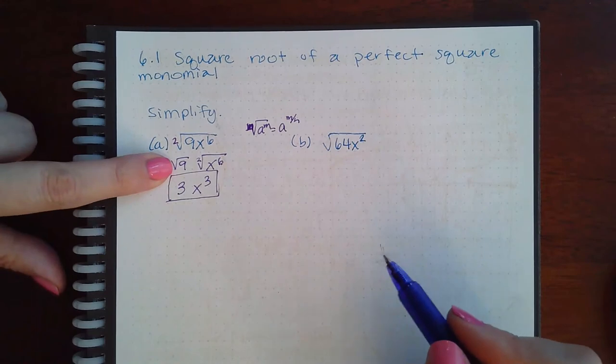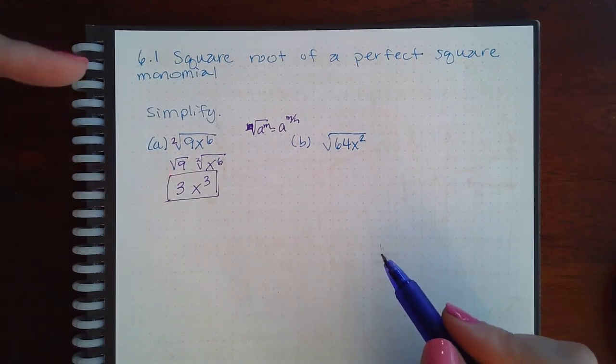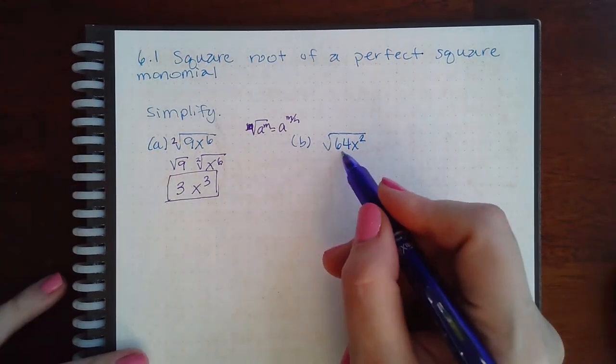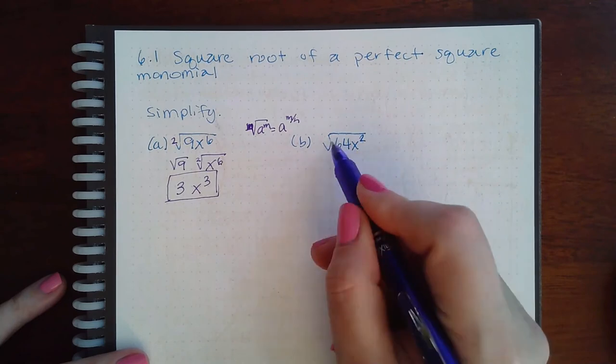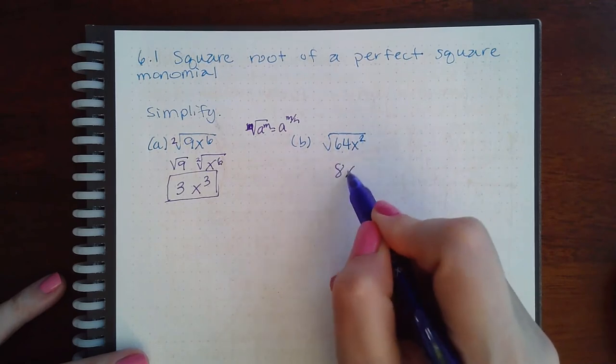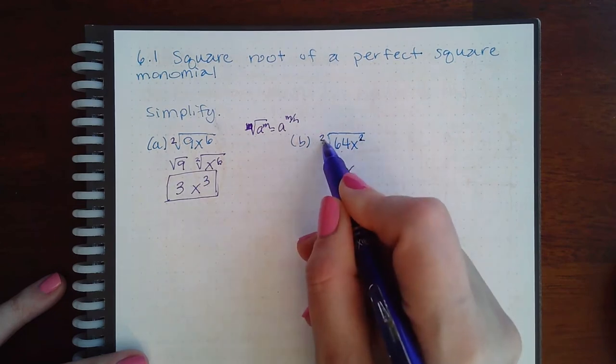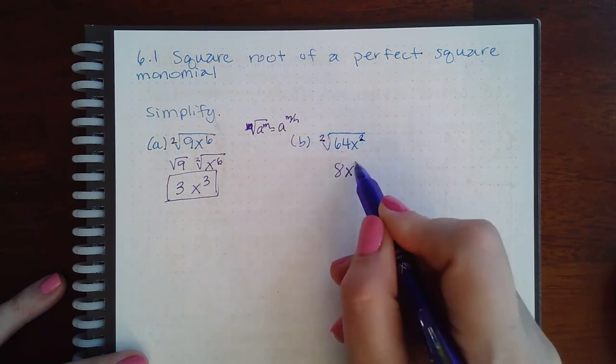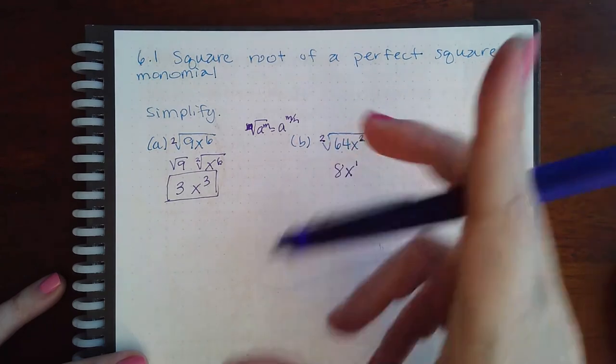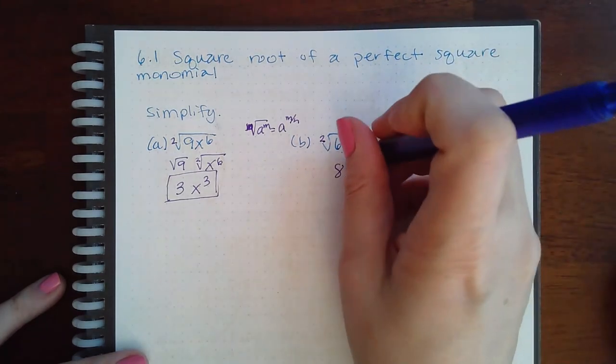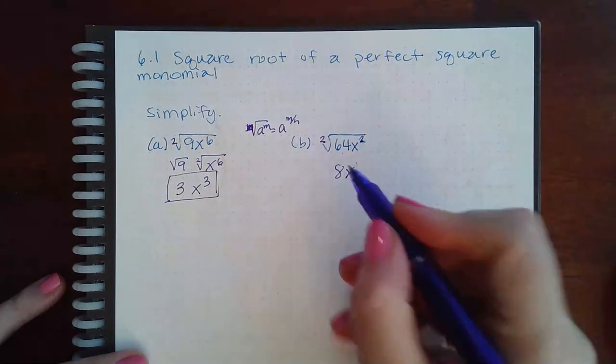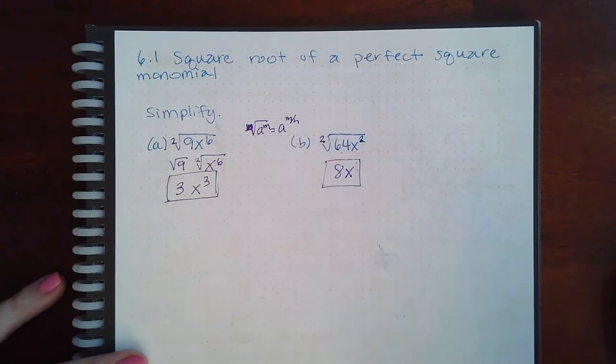Now this step, I usually don't write out. I just do it in my head. So the square root of 64 is 8. And then I know my base is x. And then I'm going to have this exponent divided by that exponent. So 2 divided by 2 is just 1. And typically when the exponent is 1, we don't usually write it. So the response here is just going to be 8x.